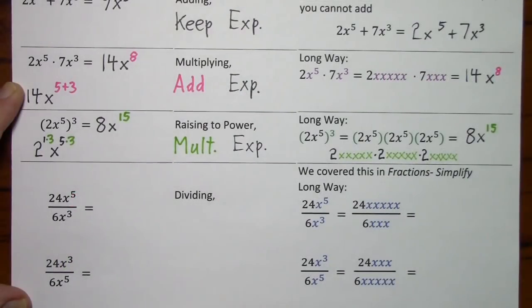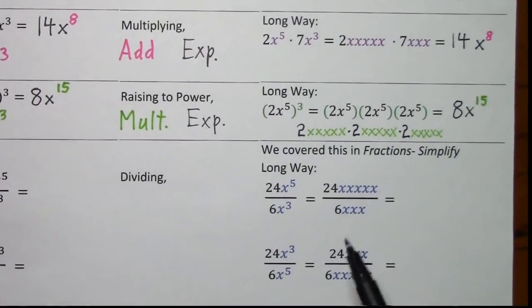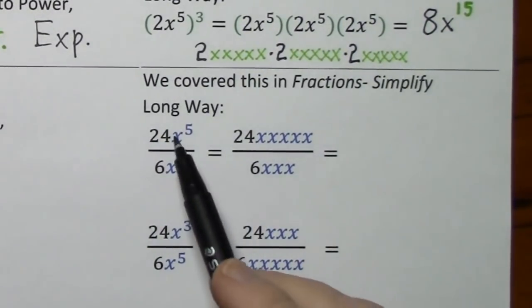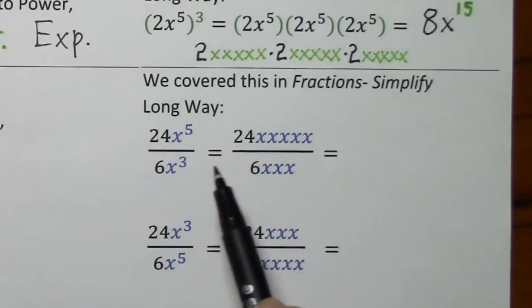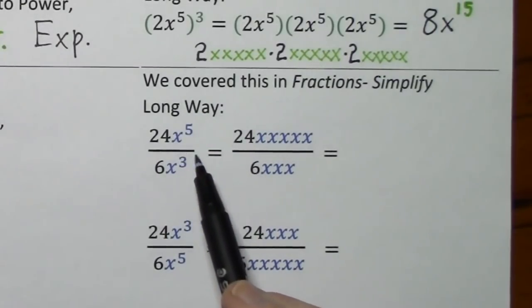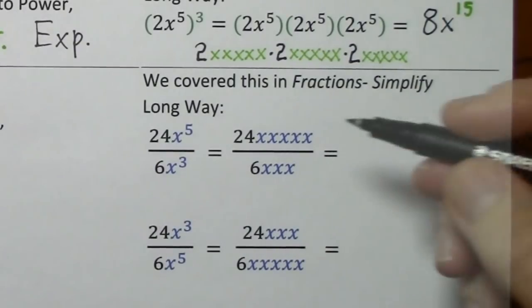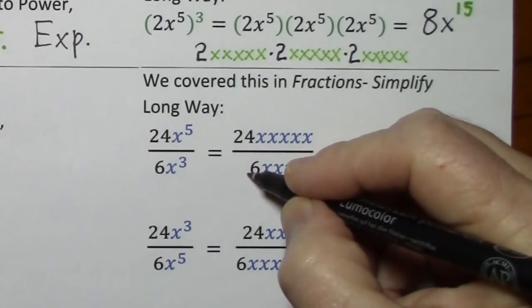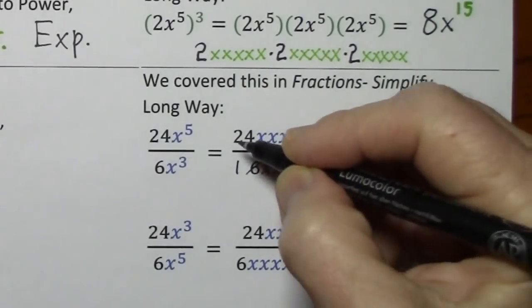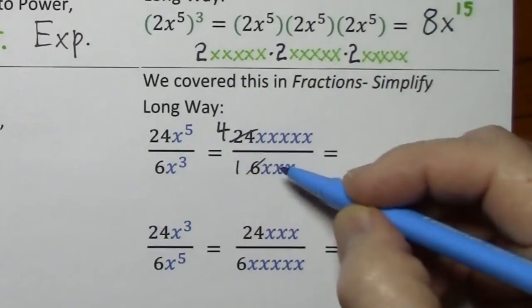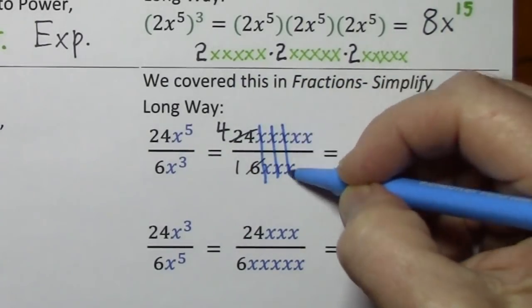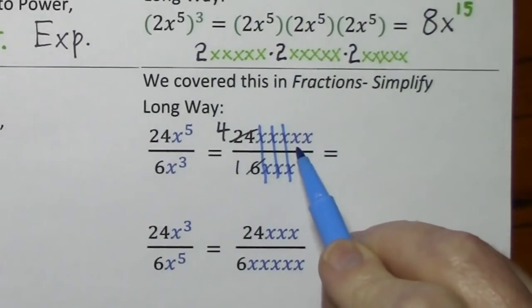For the last two examples, we're dividing. We covered this in the video Fractions Simplify. First I showed the long way. So 24x to the fifth can be shown here, and 6x to the third. So with the 24 and 6, we'll simplify as usual. Divide by 6, divide by 6. But with the x's, we simply cancel out common factors, and we'll be left with x squared.